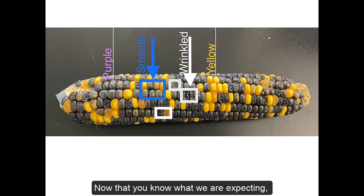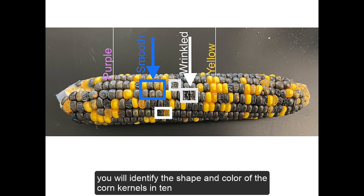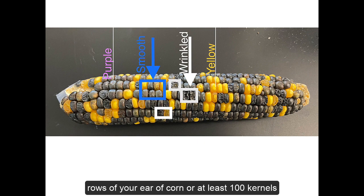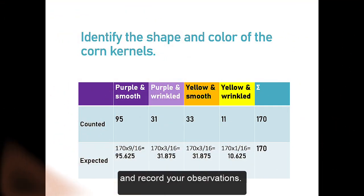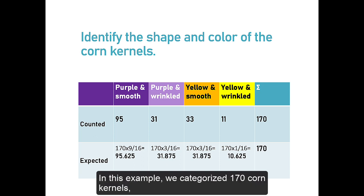Now that you know what we are expecting, you will identify the shape and color of the corn kernels in 10 rows of your ear of corn, or at least 100 kernels, and record your observations. In this example, we categorized 170 corn kernels.